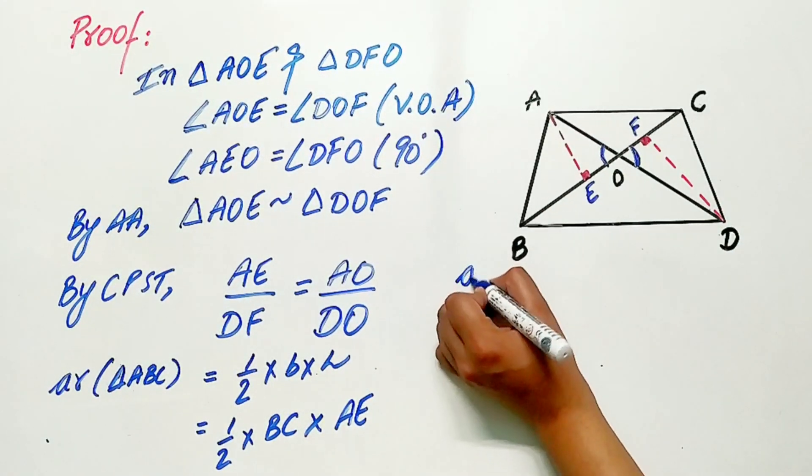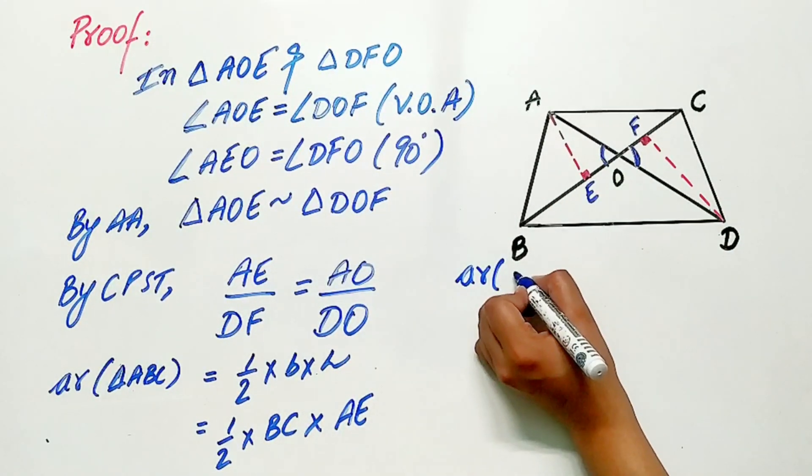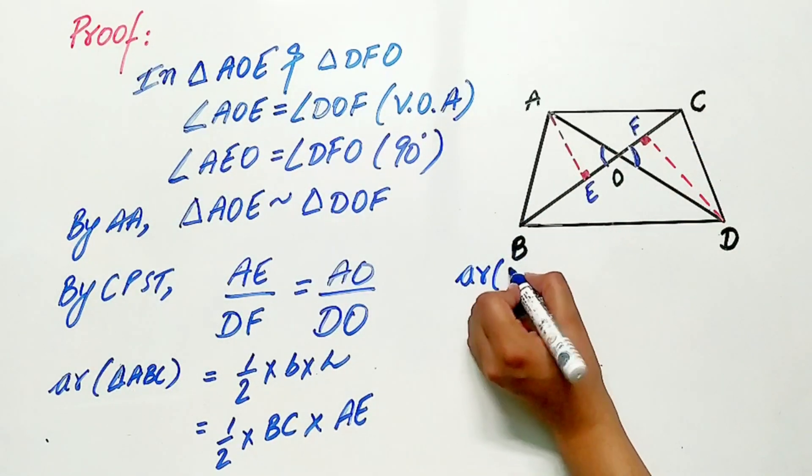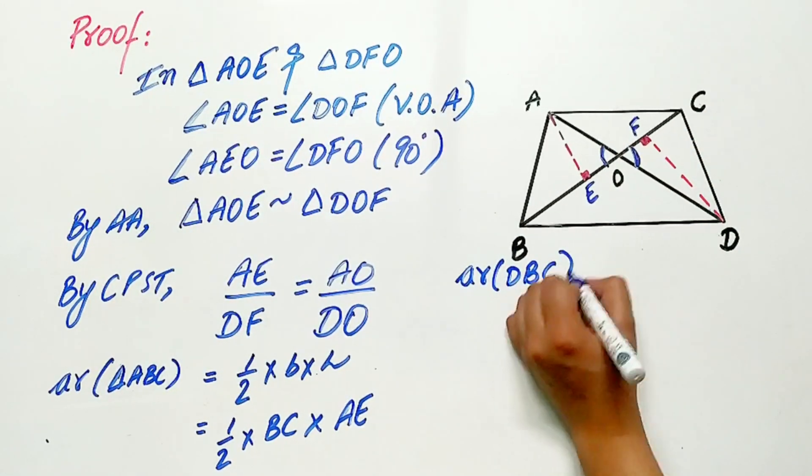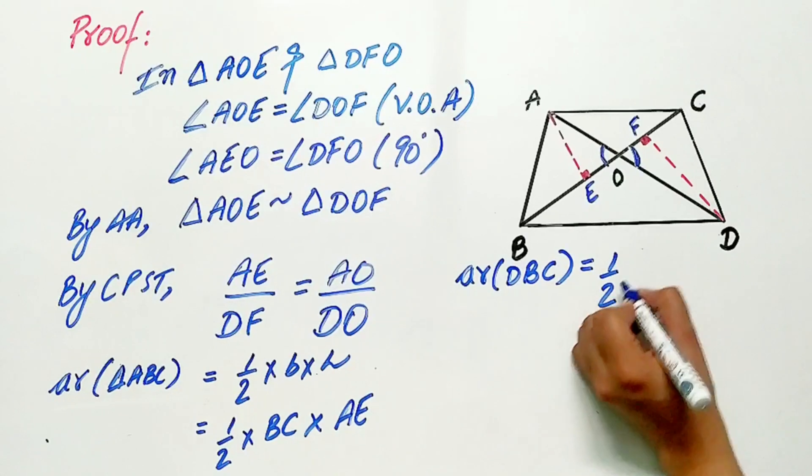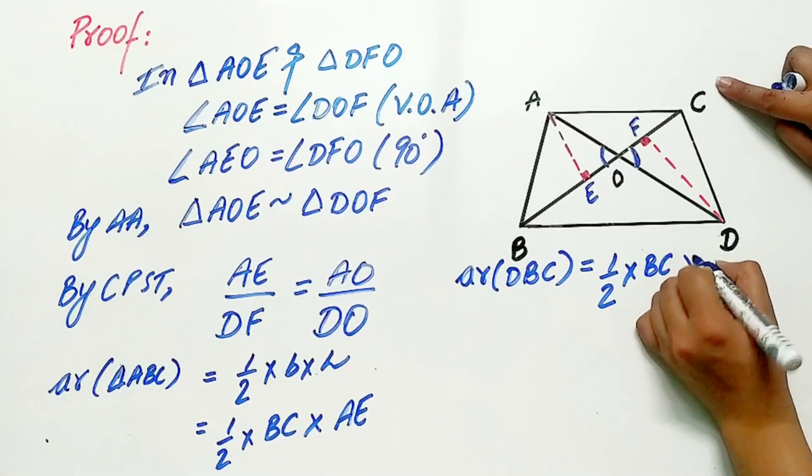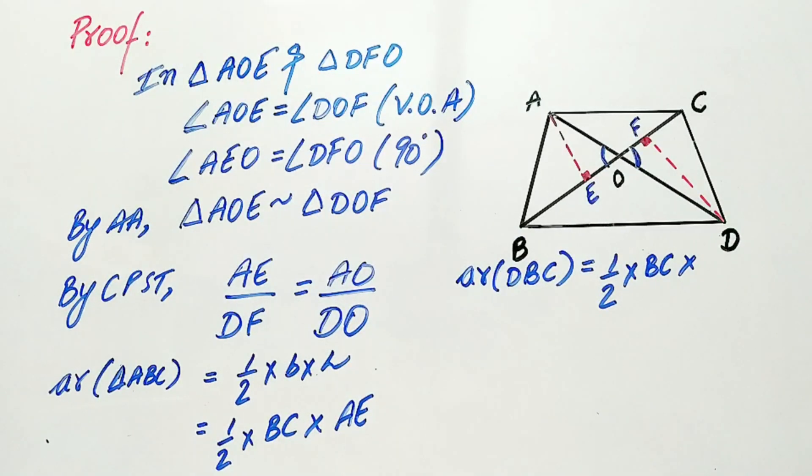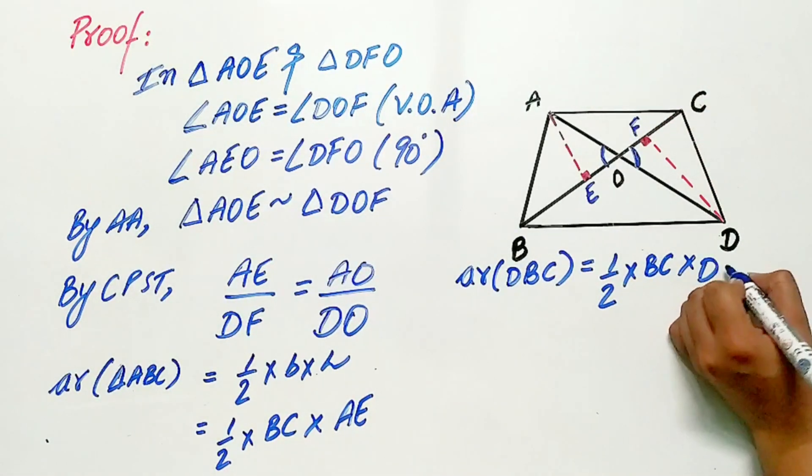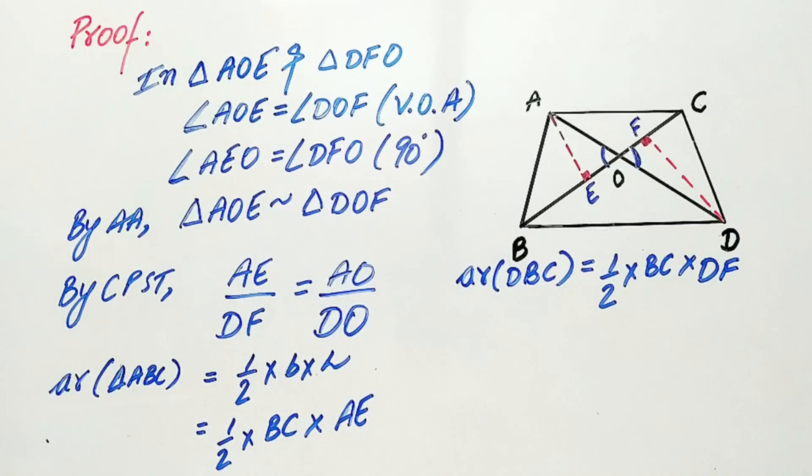Similarly, area of triangle DBC is equal to half base is BC and height is DF.